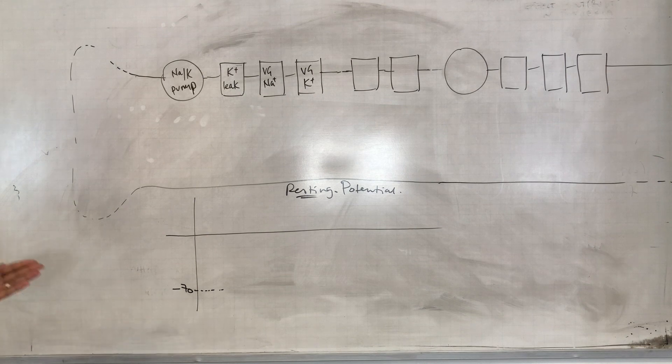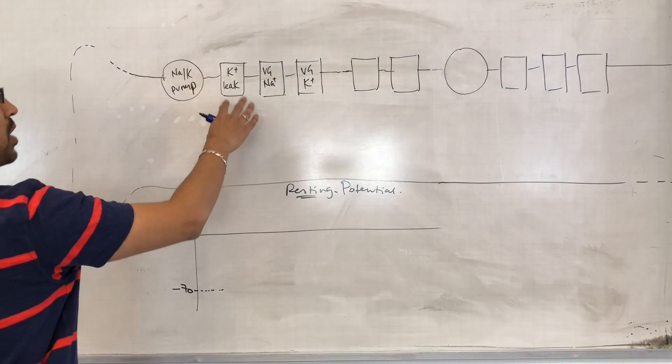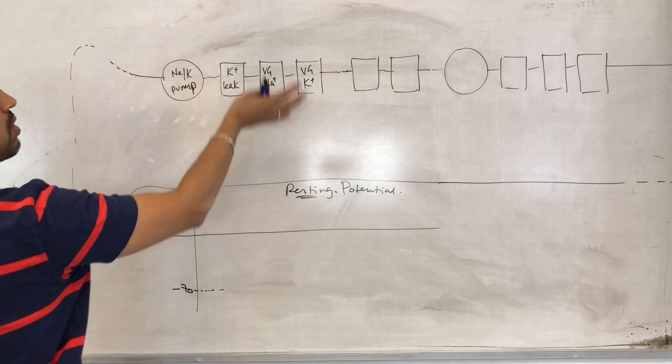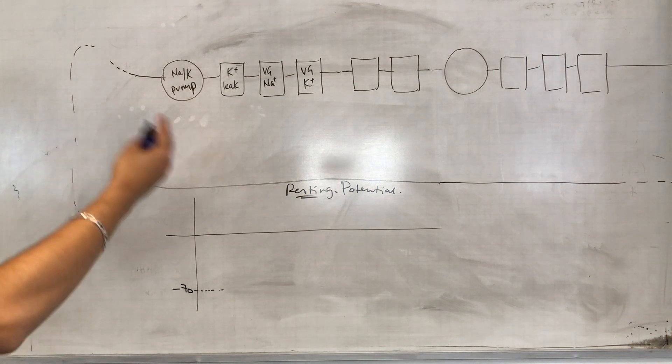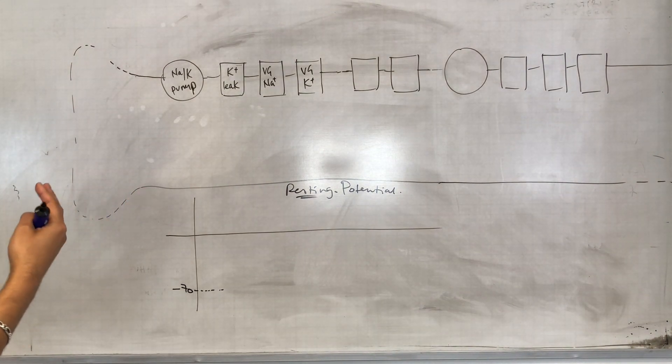Minus 70 means there is more negative charge inside the cell than the outside. Now let's look at why that is the case.